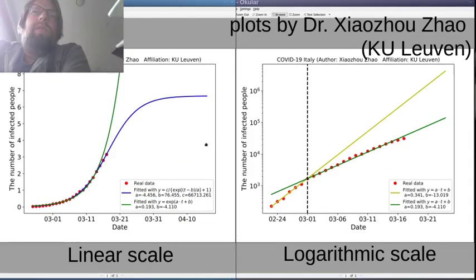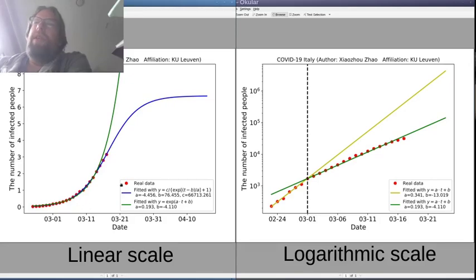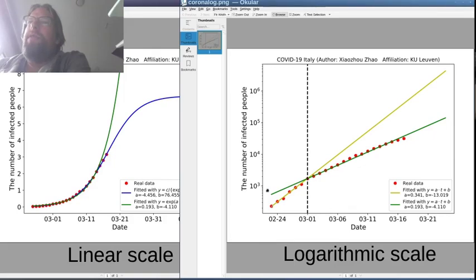And here is a second example showing the usefulness of this logarithmic scale. So on the left hand side once again the red data points are data points of number of cases, but this time for Italy as a function of days. And so this graph was made by my colleague Charles Zhao from K-Leuven. And so on the right hand side the same data points are shown, but now in logarithmic scale on the vertical axis number of people on the horizontal axis the date.